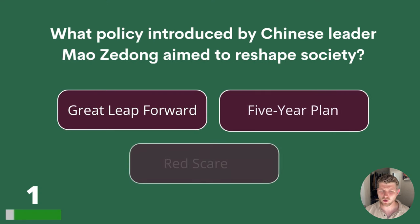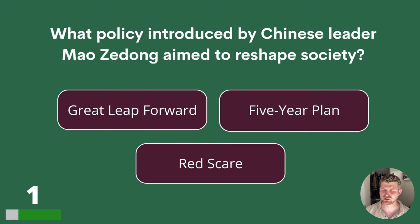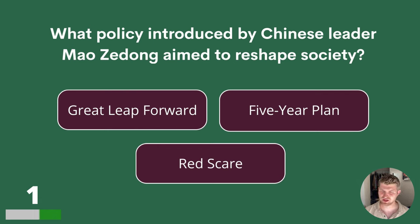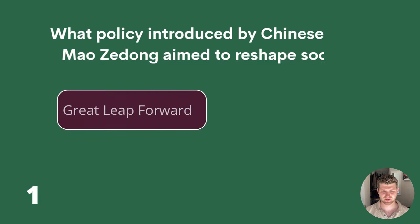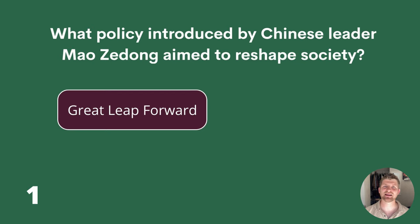Question 1. What policy introduced by Chinese leader Mao Zedong aimed to reshape society? Great Leap Forward, Five-Year Plan or Red Scare? The answer is Great Leap Forward.